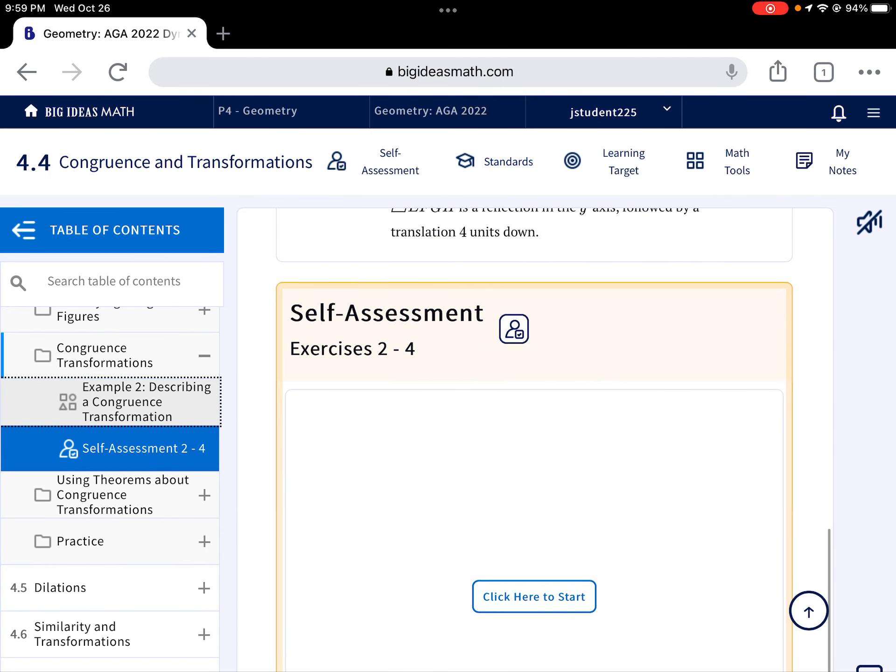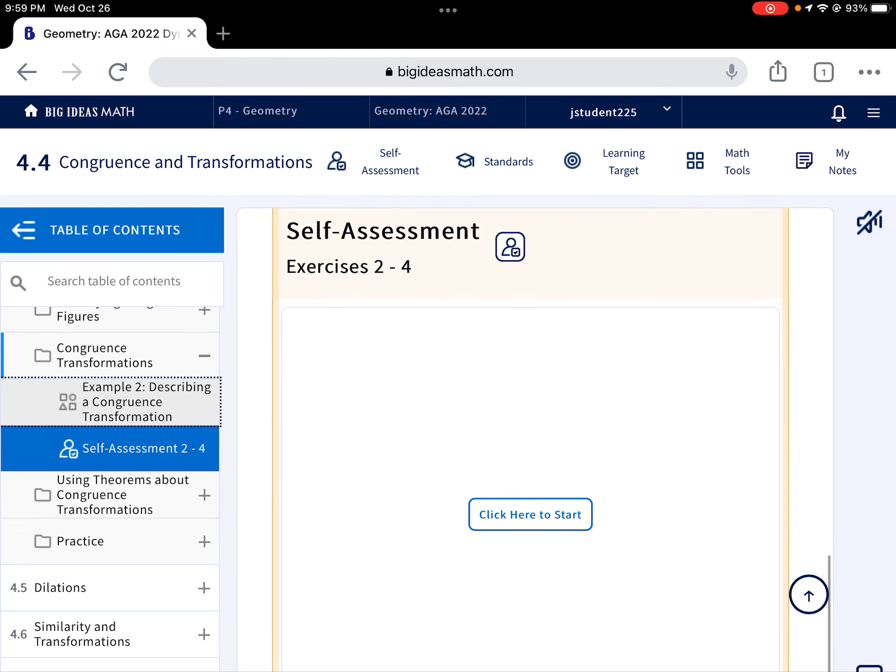And then, this is the self-assessment piece right below that. Self-assessment Problems 2 through 4. I want you to take some time to try and do those on your own. That way you can kind of quickly check and see if you're doing those right. And when you're done with that, you should be ready to start the assignment.